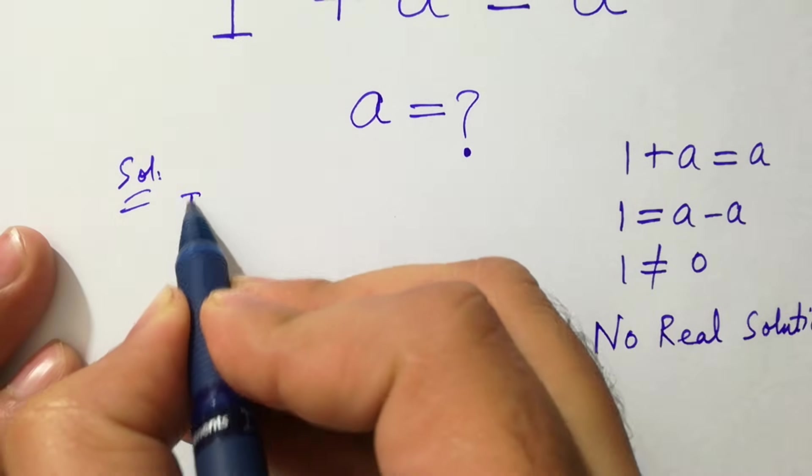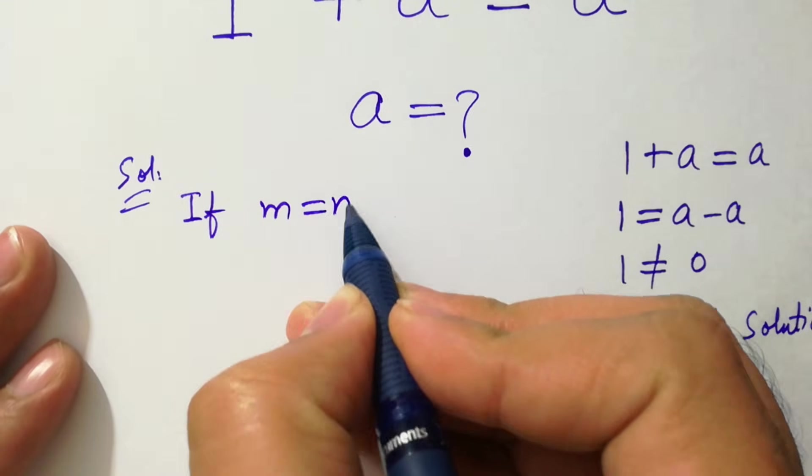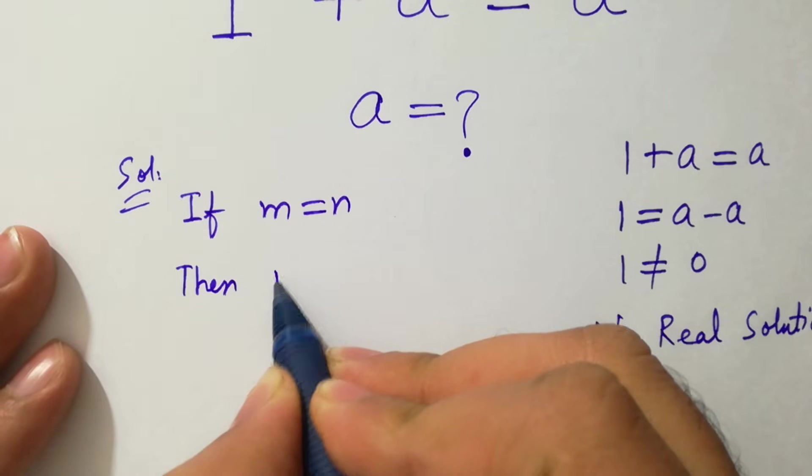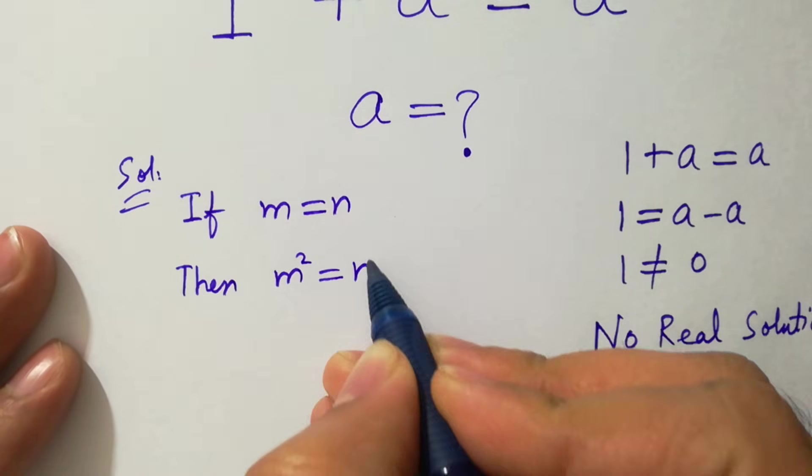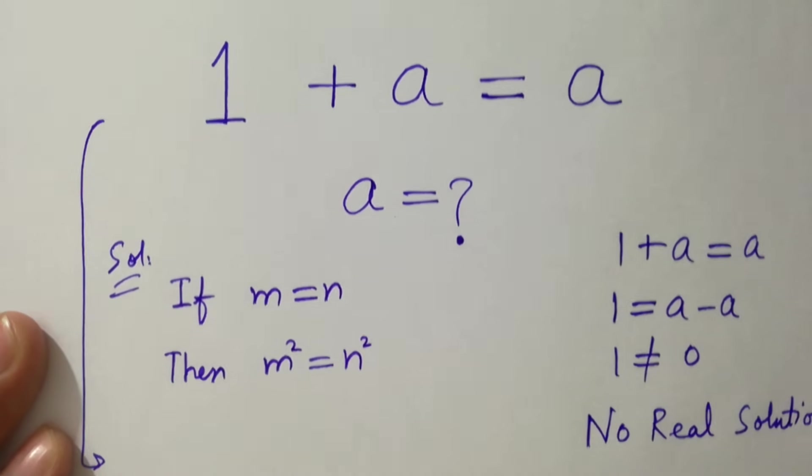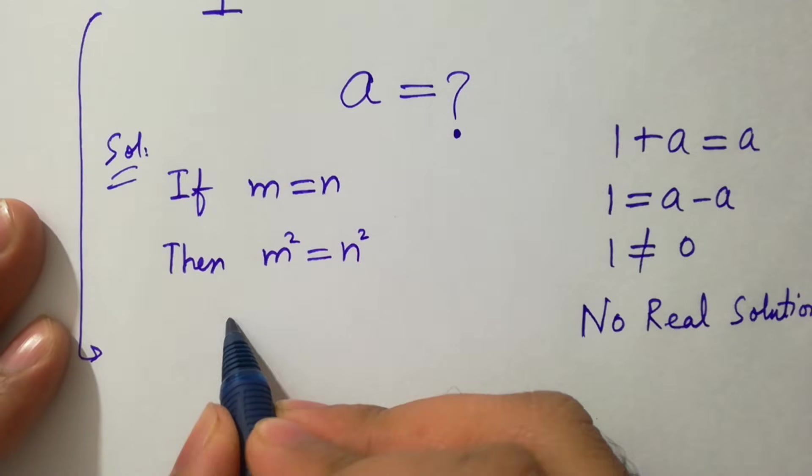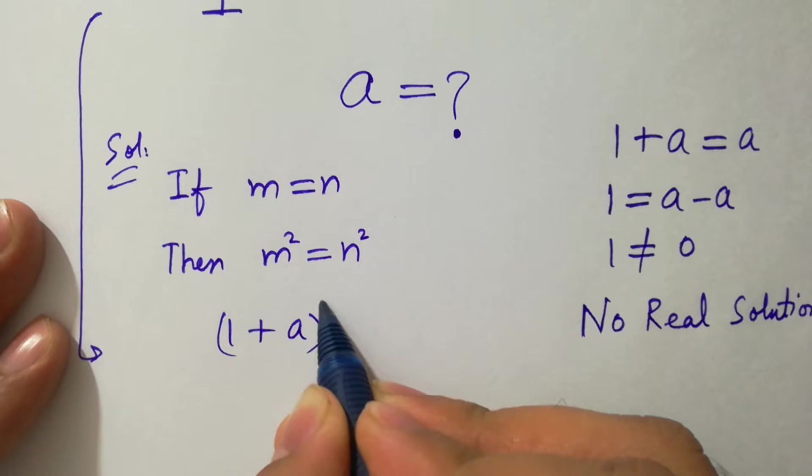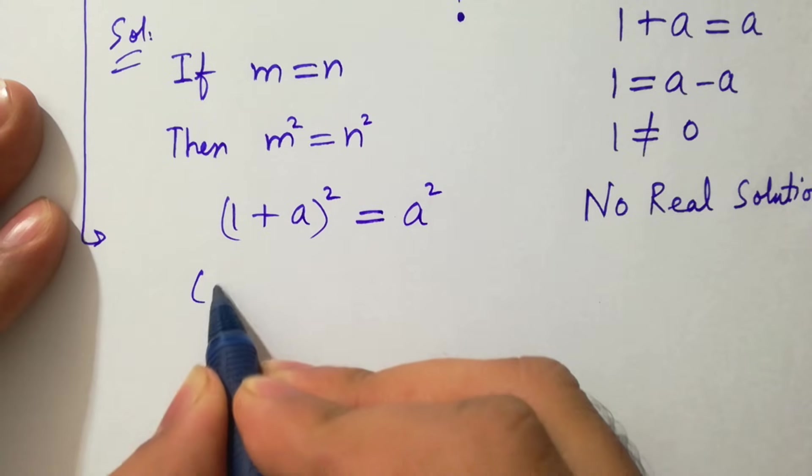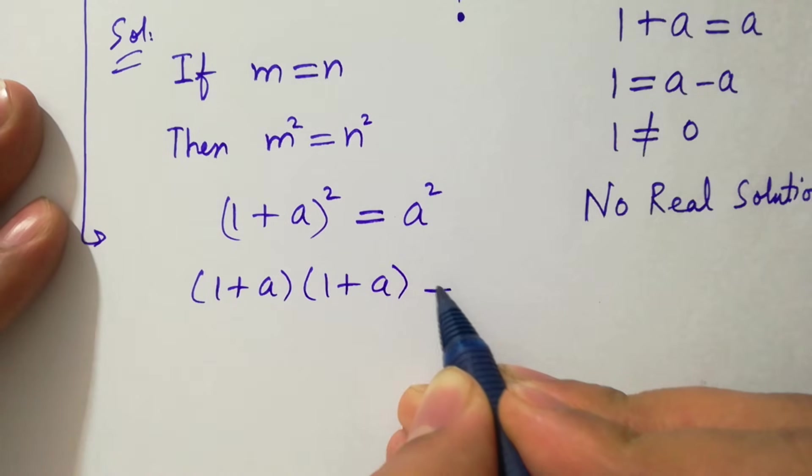But if m = n, then m² = n². Then we can square both sides of this equation. (1 + a)² = a², which is the same as (1 + a)(1 + a) = a².